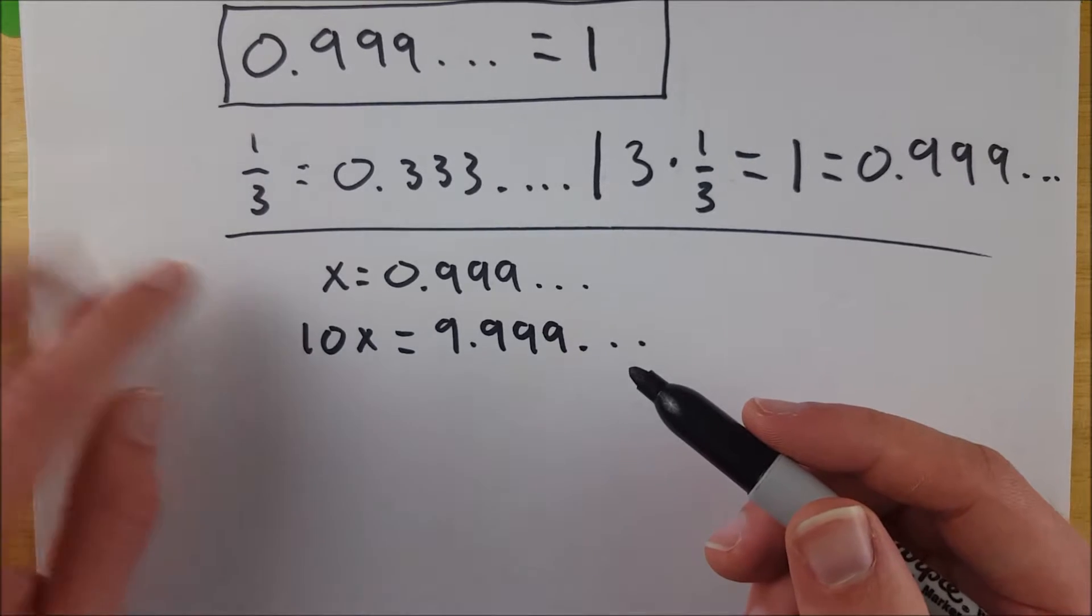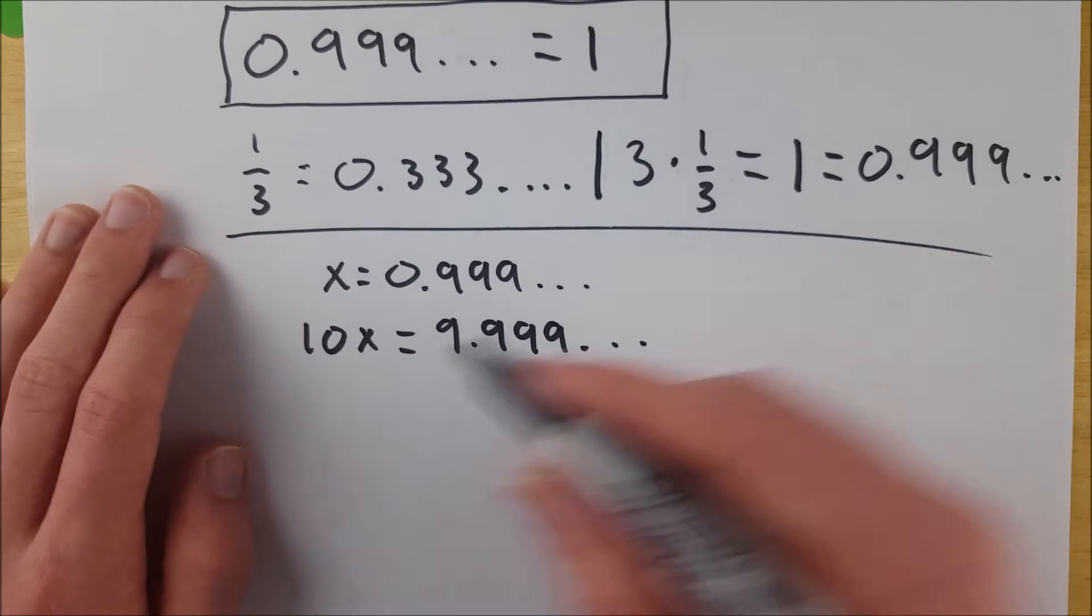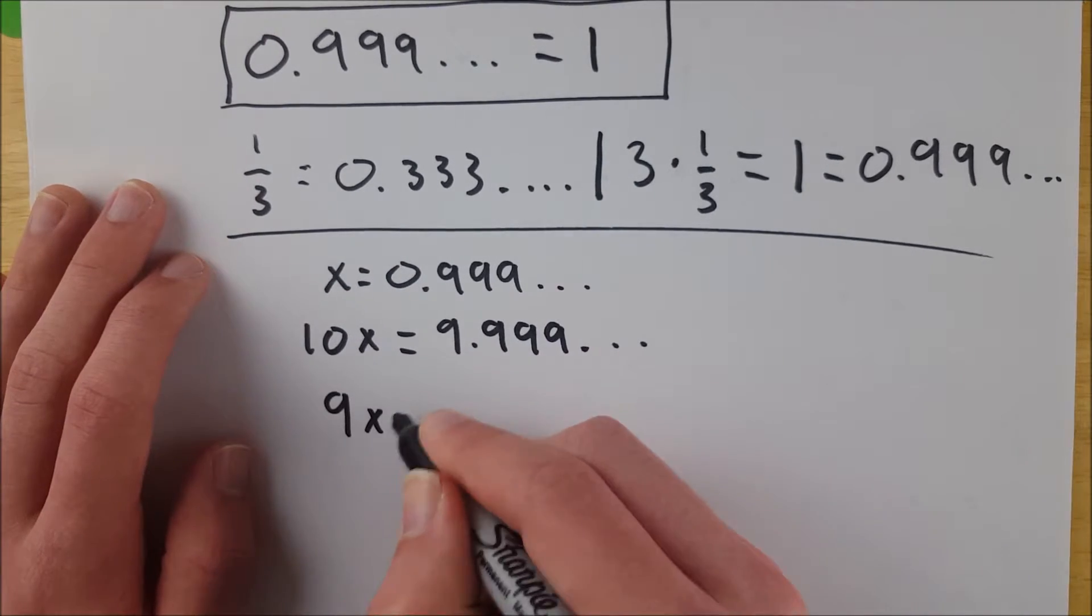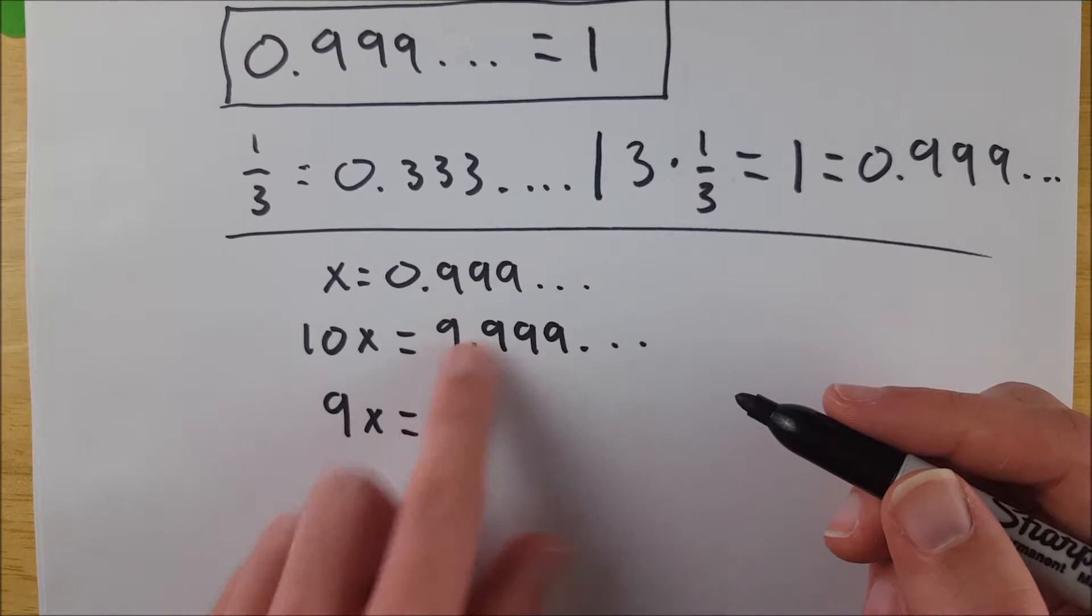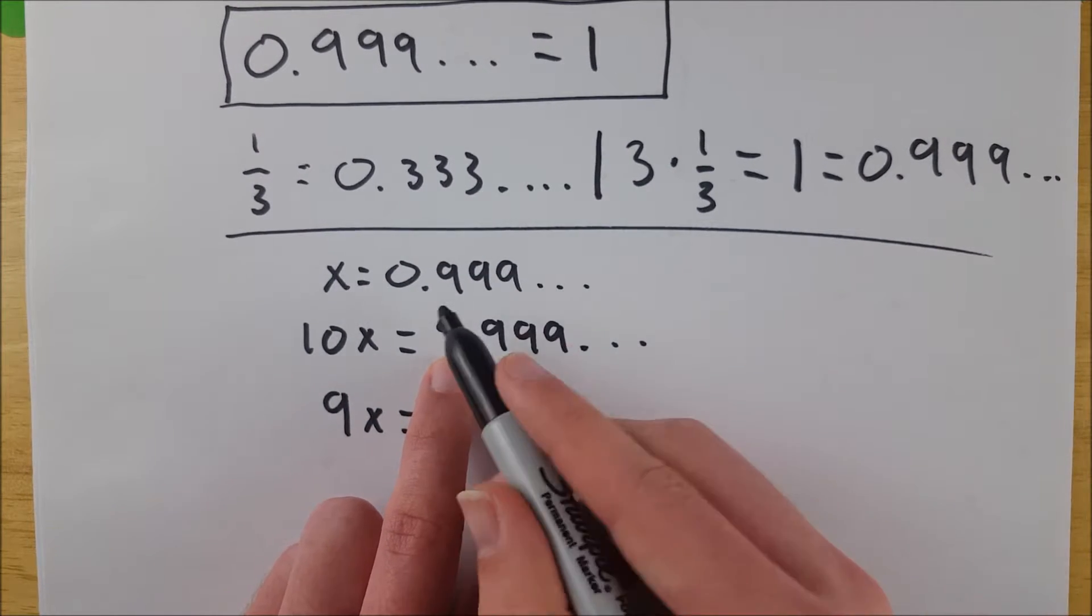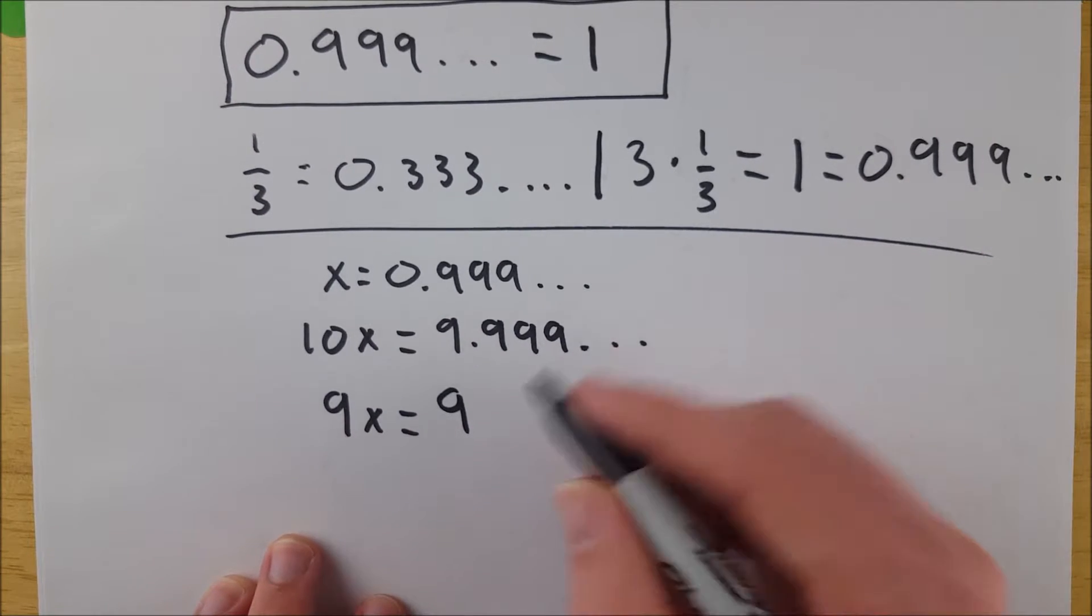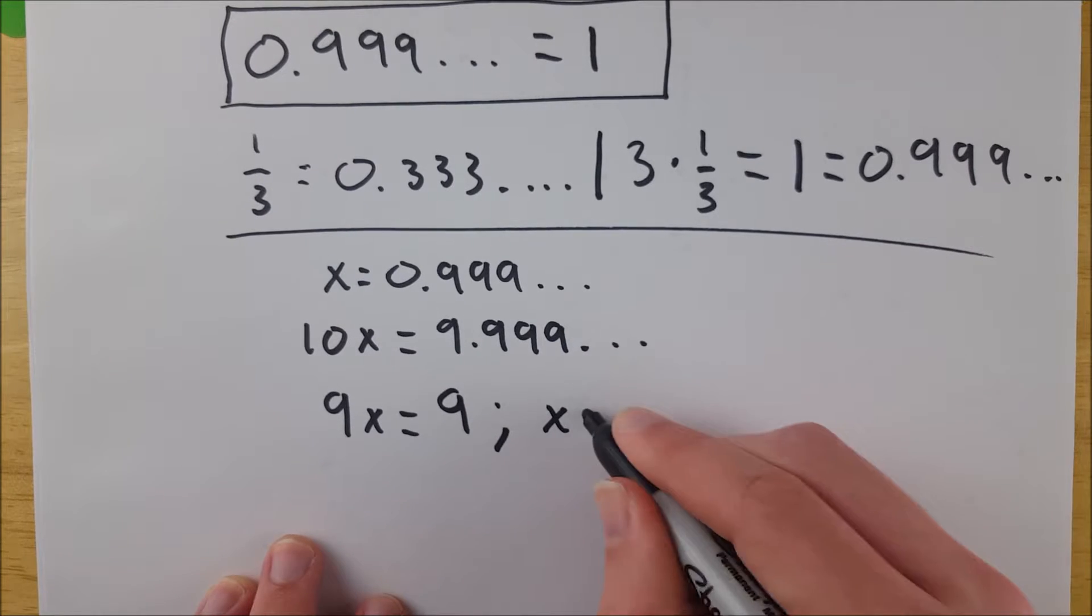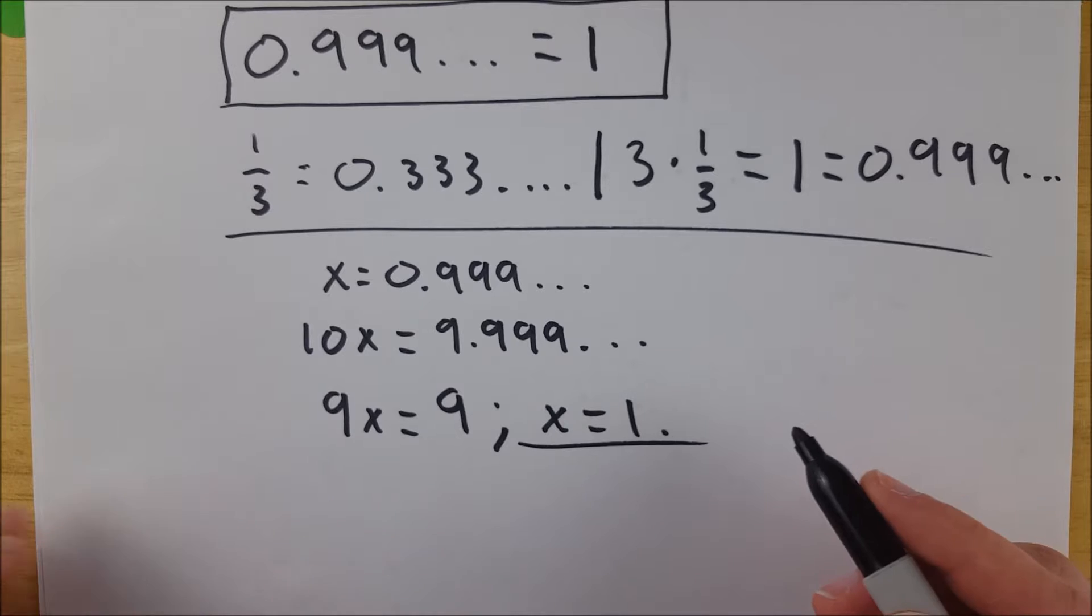Now all we have to do is subtract the first equation from the second equation. So that's 10x minus x. That's 9x. And then x was equal to this. So we can subtract this from this. 9.99999 repeating forever, minus 0.999 repeating forever. It's just 9. And oh, there it is. We divide both sides by 9, and x is equal to 1. Once again, what do you know? Very cool.